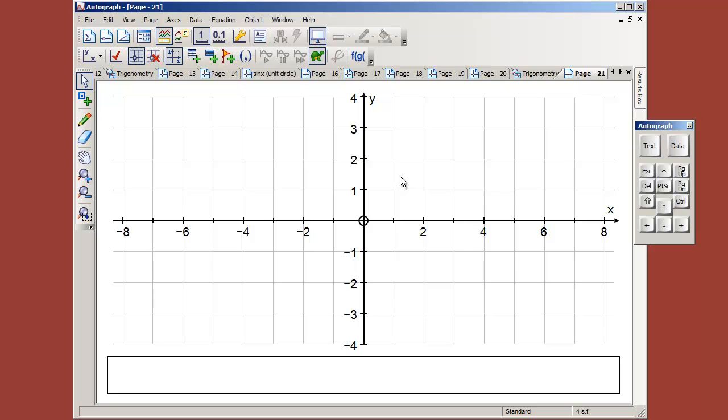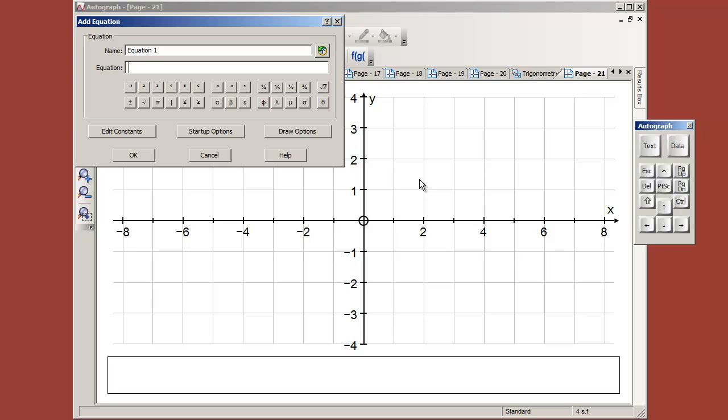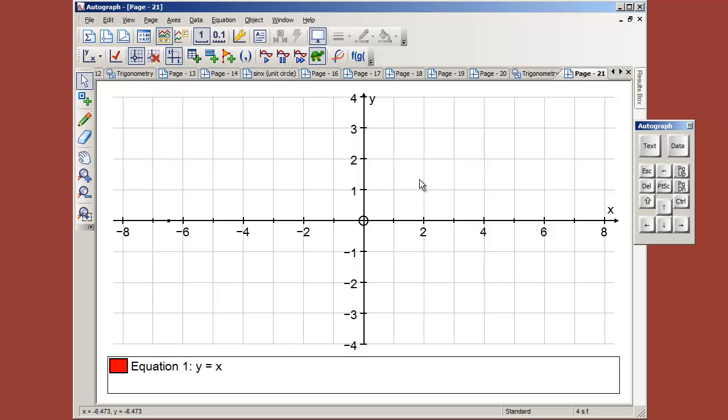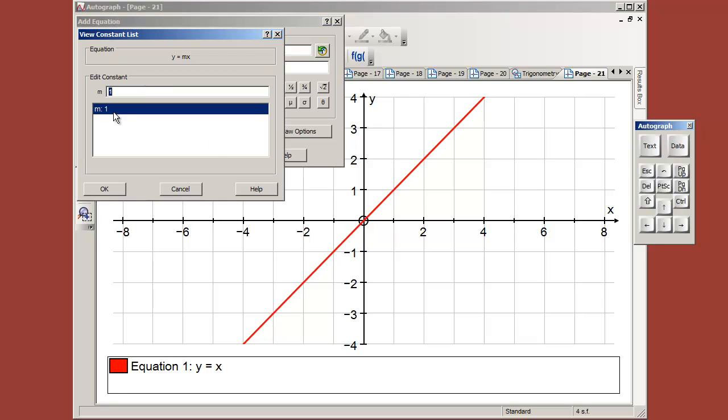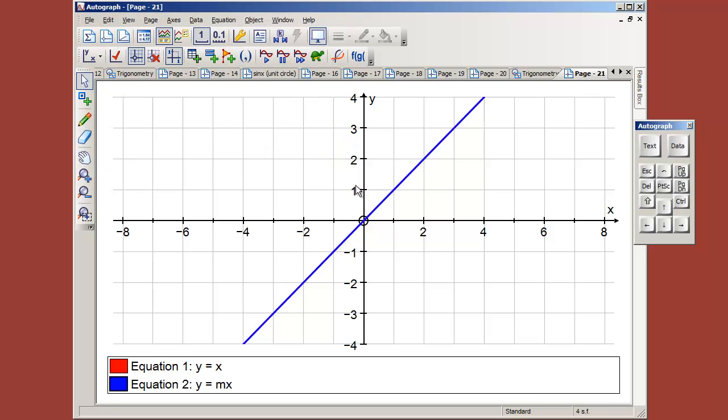So we'll just enter an equation y equals x. Don't think we need slow plots just at the moment. And then I'm going to put in y equals mx. Now m will be 1 by default to start with, and there it is.